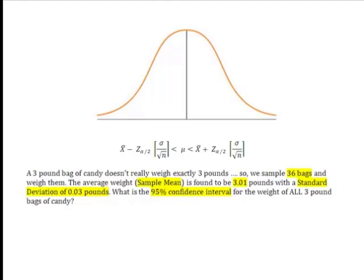I want to know with 95% confidence what the weight of all my three-pound bags are. I'm trying to set two values — a low end and a high end — in between which 95% of all of my bags of candy will weigh. That's the entire concept of a confidence interval: I want to know the upper and lower values, or weights, between which 95% of all three-pound bags of candy in the universe are going to fall.